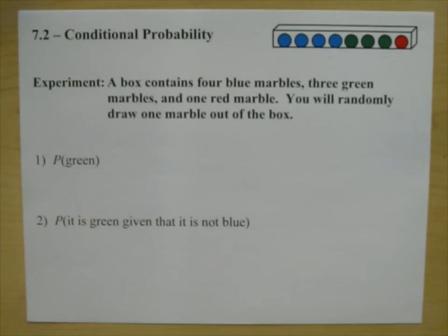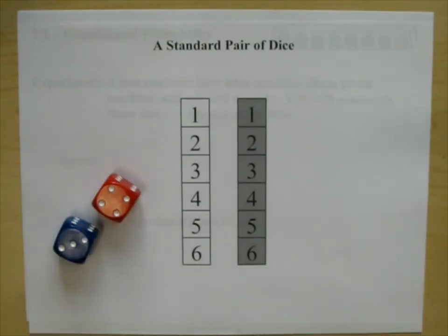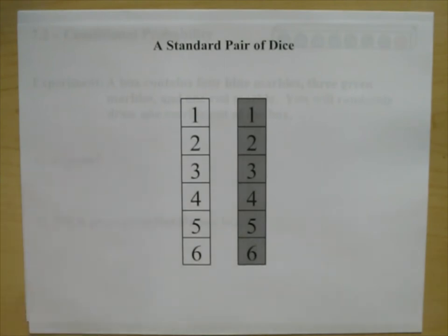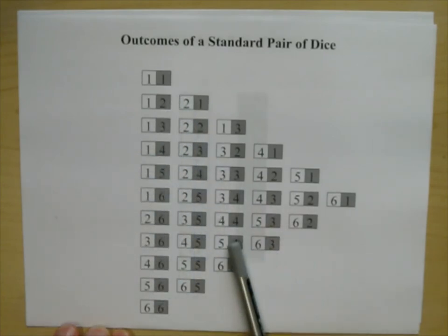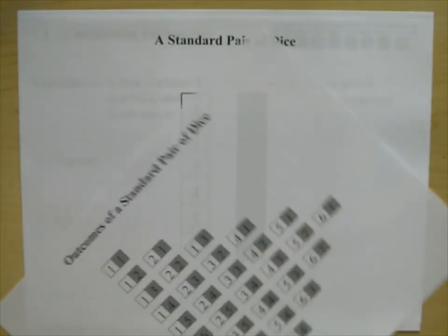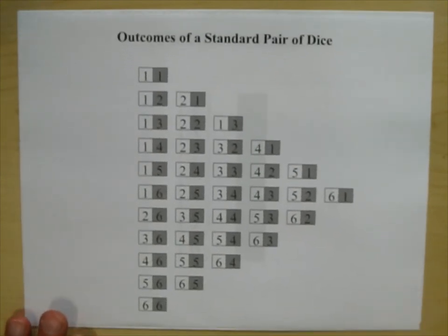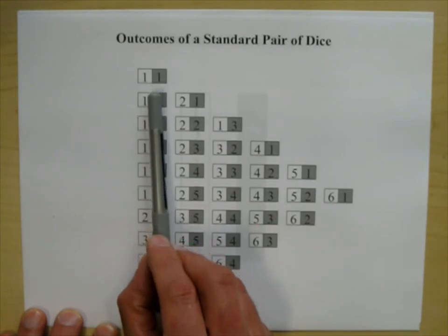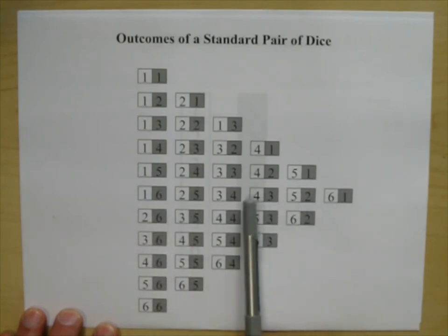Now, something that is related to probability — before we get into this — is we have a standard pair of dice. One of them is white and one is gray, and I have a red and blue one. We can list out the sample space of a standard pair of dice. I did not list out sample spaces like this in the last section; I did it this way so I can fit them, and they make this pattern.